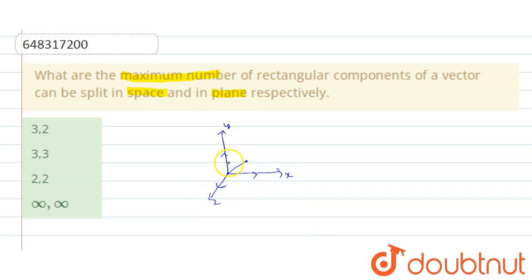That is it has three components - two rectangular components and one orthogonal component. So we can say a vector can be split into three components in a space.